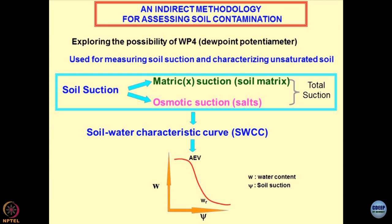The soil water characteristic curve (SWCC) is widely used in agricultural engineering and water resources. Colleagues doing reservoir modeling, irrigation modeling, irrigation scheduling, and soil nutritional analysis are eager to know SWCC. It is also known as the soil water retention curve (SWRC), but as geotechnical engineers we prefer SWCC. Essentially, SWCC is a relationship between moisture content — either gravimetric or volumetric (θ) — and suction (ψ, which corresponds to total suction).